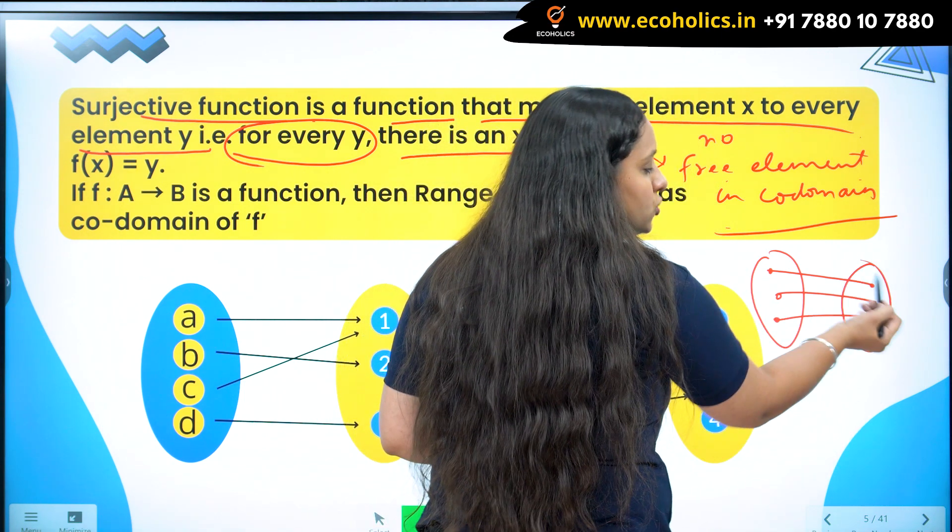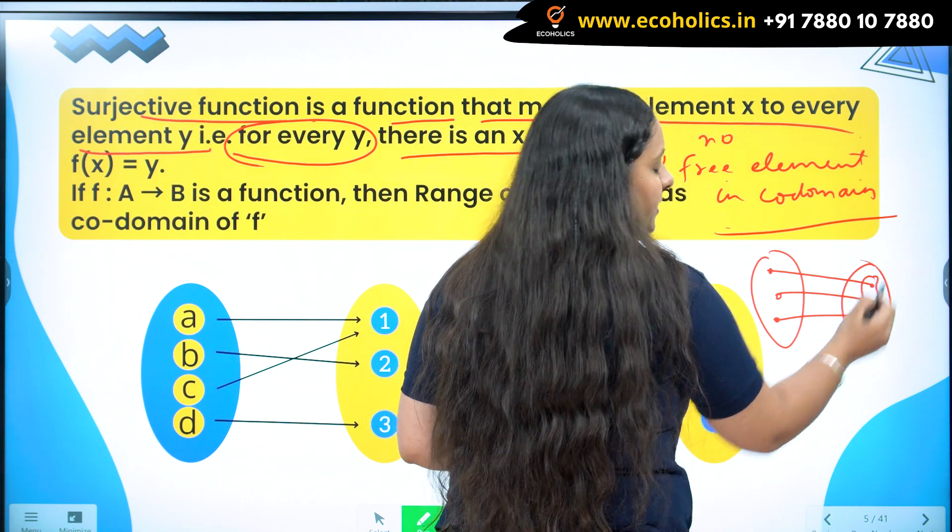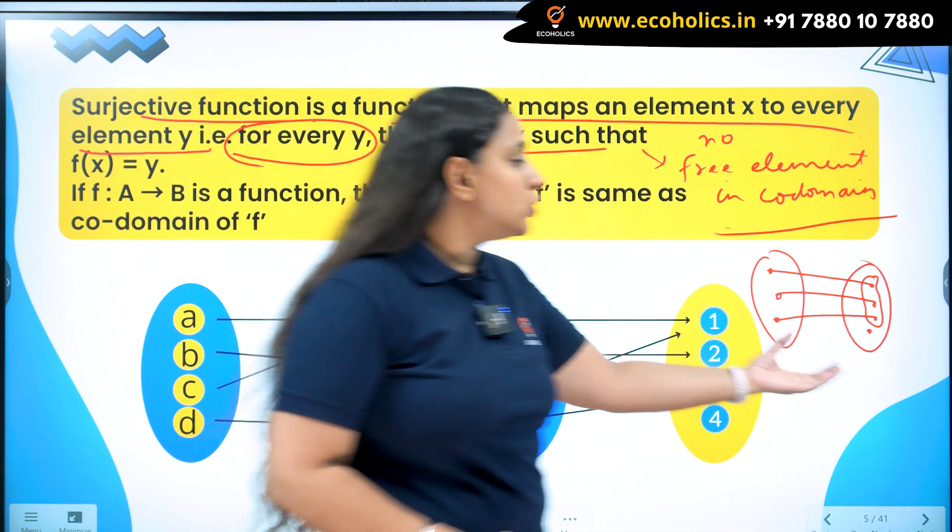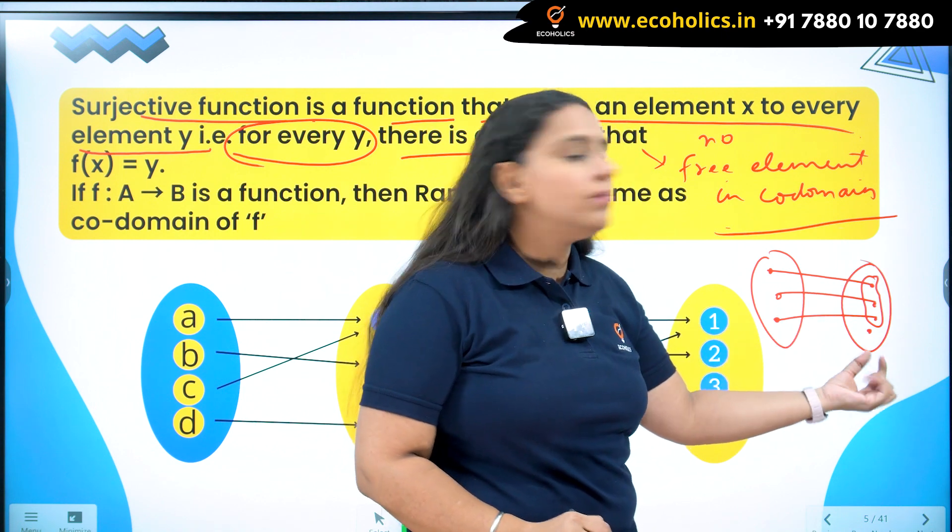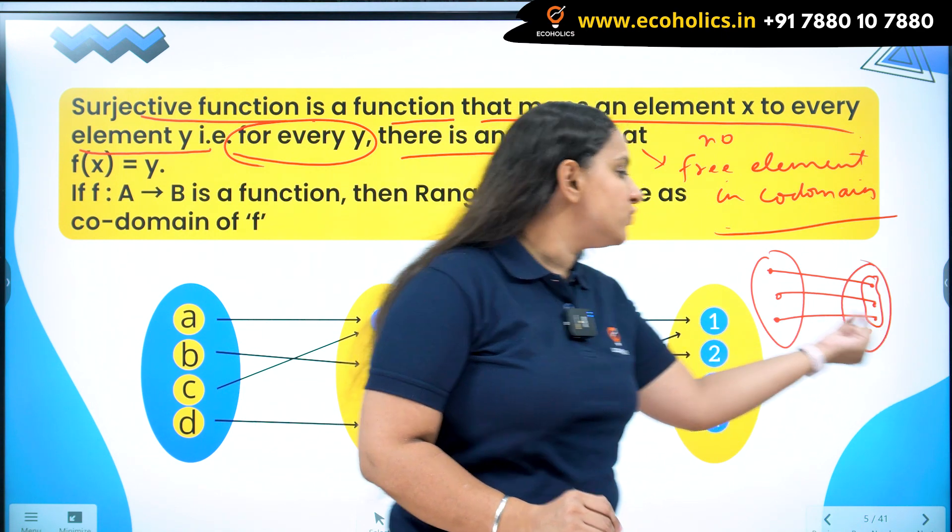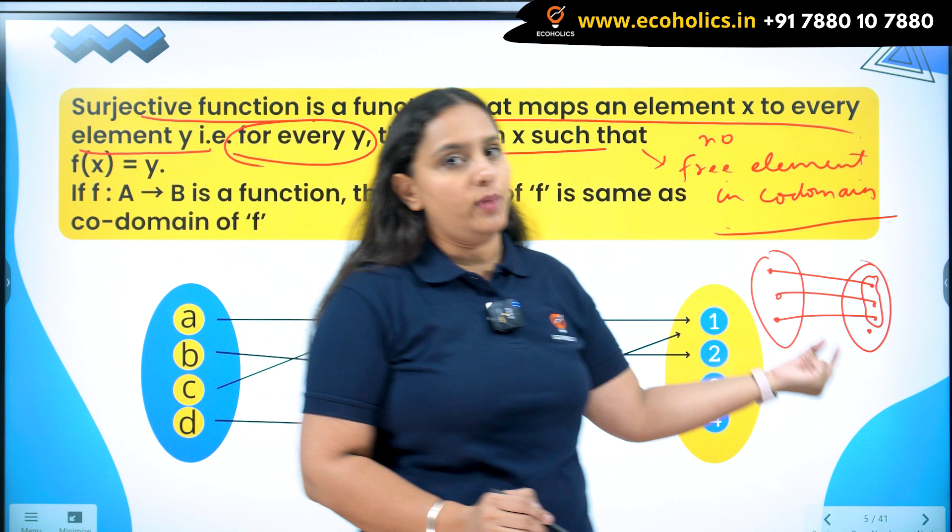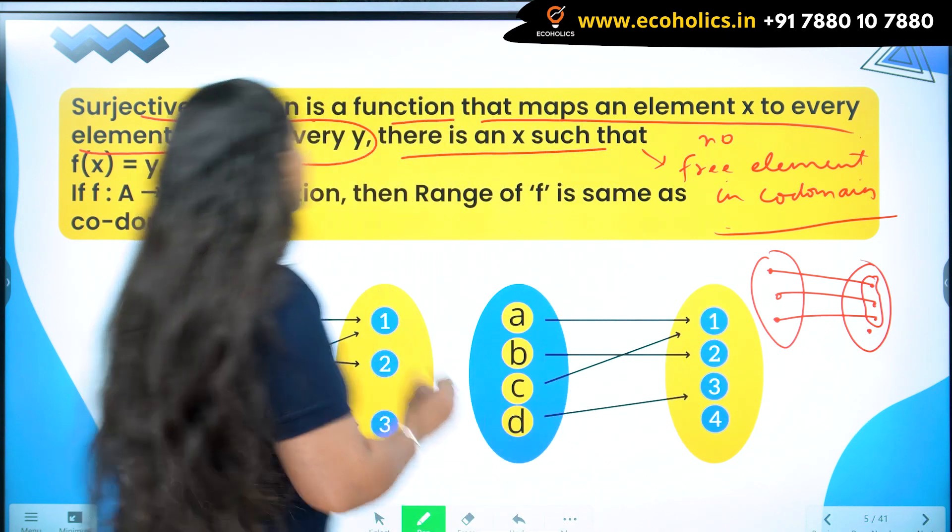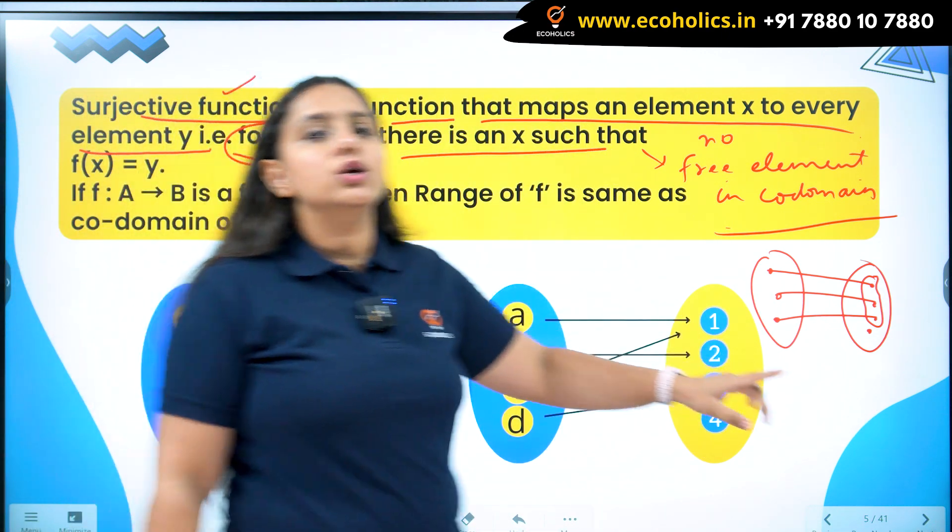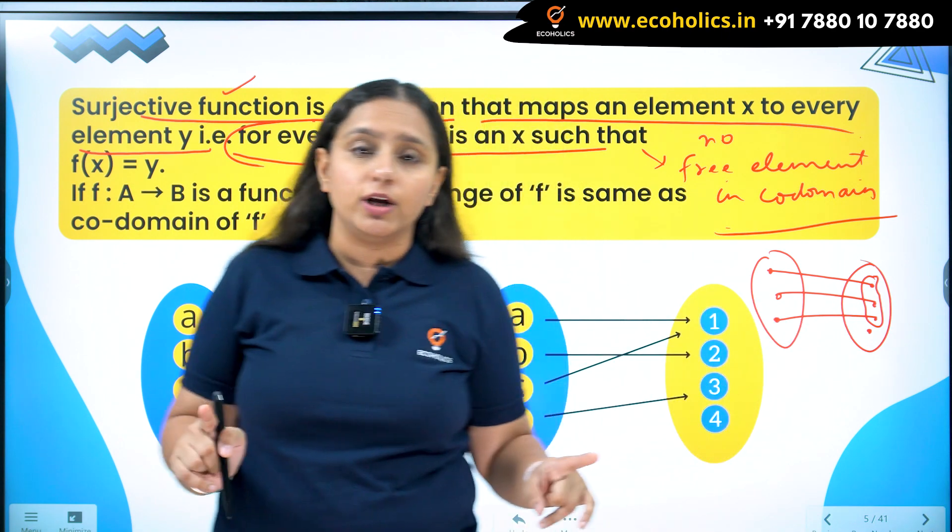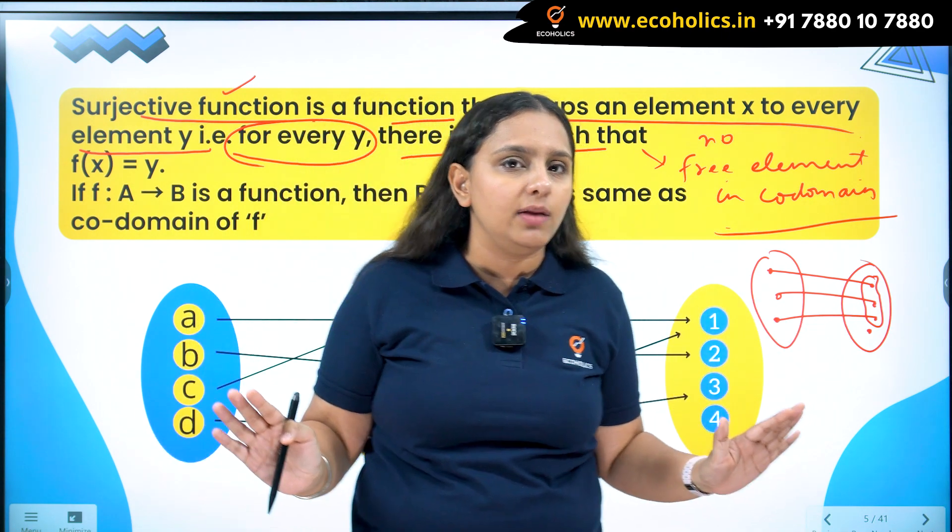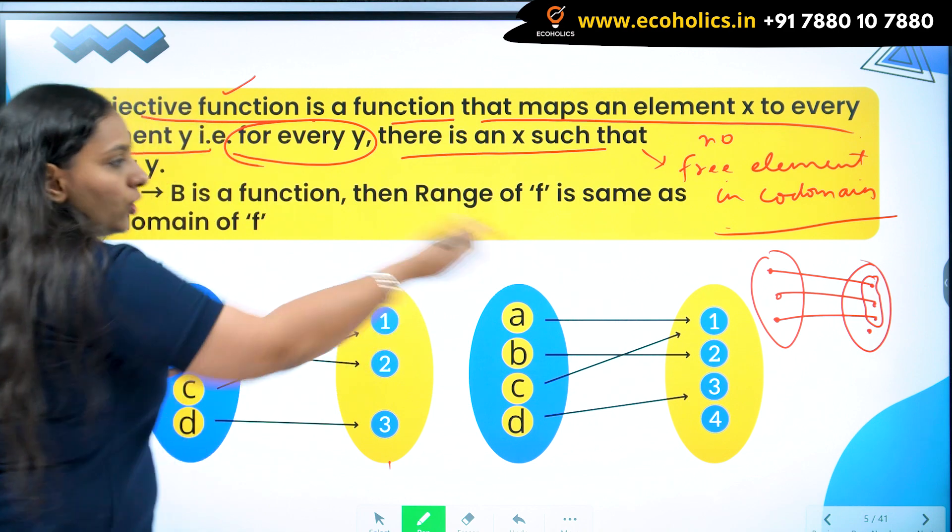This whole set is co-domain, but these three elements make up my range. The total of the set is co-domain, but the elements for which we have pre-images come to my range only. So for a surjective function, my co-domain should be exactly equal to range because I don't want any free element in my co-domain.